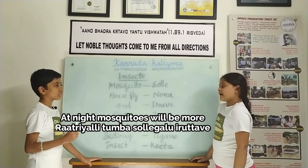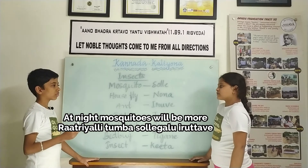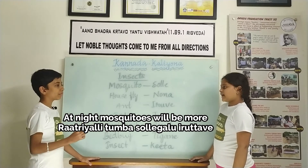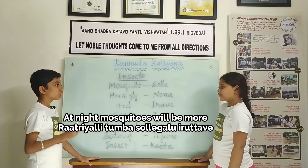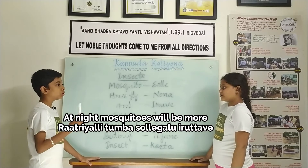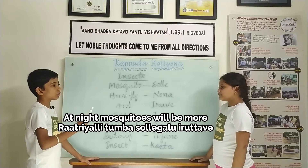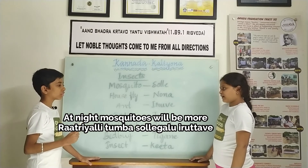What's your first sentence? At night, mosquitoes will be more. Rathri alli. Thumbaa solle galu. Irutthave.